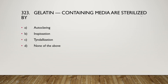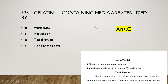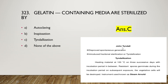Gelatin-containing media are sterilized by autoclaving, inspissation, Tyndallization, or none of the above. The right answer is option C — Tyndallization. John Tyndall introduced this process: heating material at 100°C on three successive days with incubation periods in between. Resistant spores germinate during incubation, and on subsequent exposure the vegetative cells are destroyed. The instrument used is known as a Tyndalizer (Arnold sterilizer).